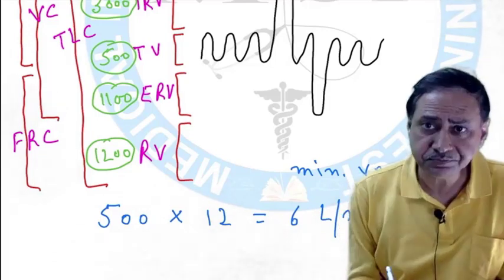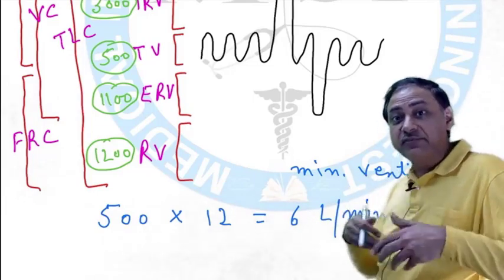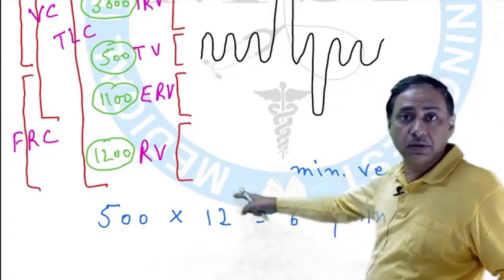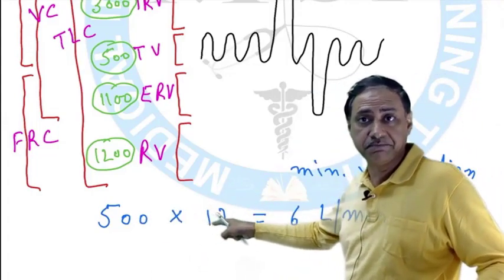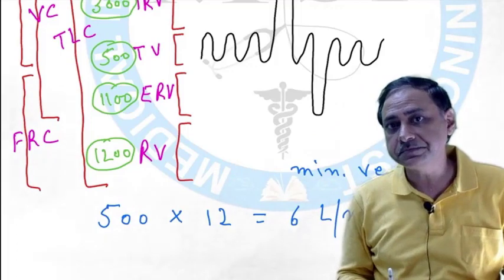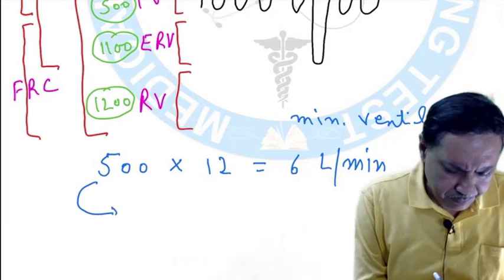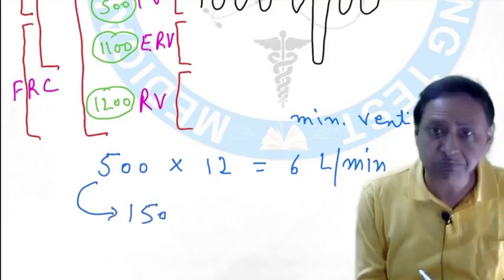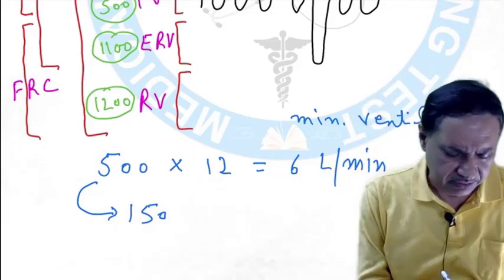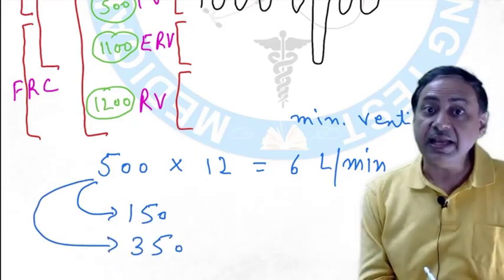In 1 minute, how much air have I taken inside? 6 L per minute — 500 mL per breath, 12 breaths per minute. Out of this 500 mL, 150 mL will be the dead space — it will remain in the dead space. 150 mL dead space, 350 mL will actually reach up to the level of the Alveolus.